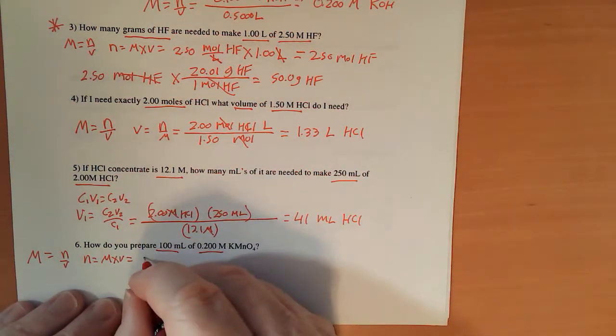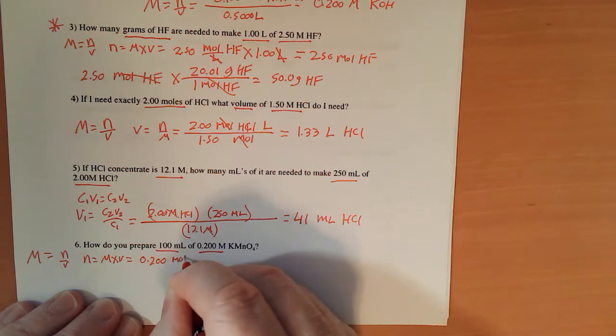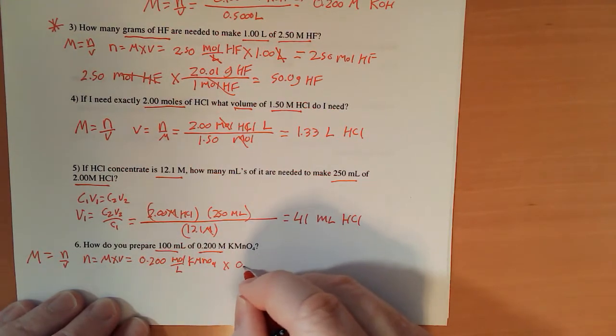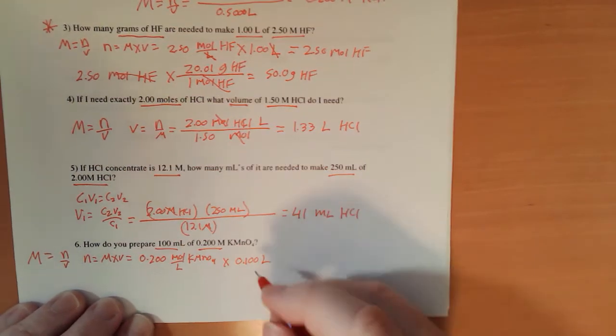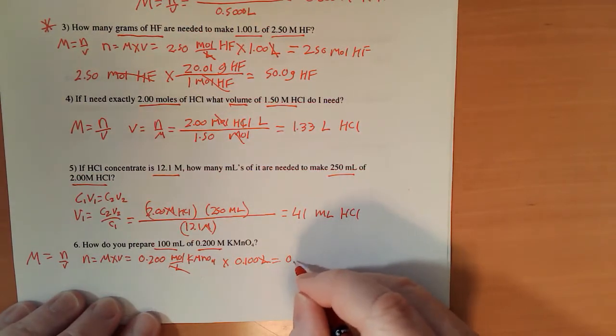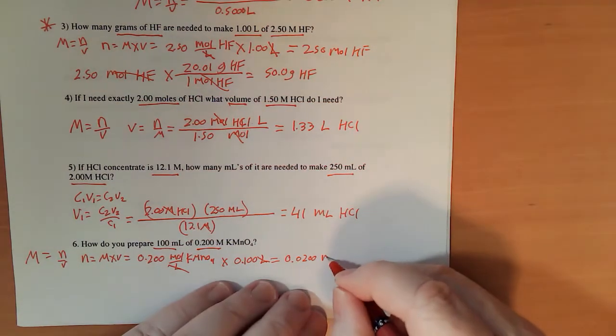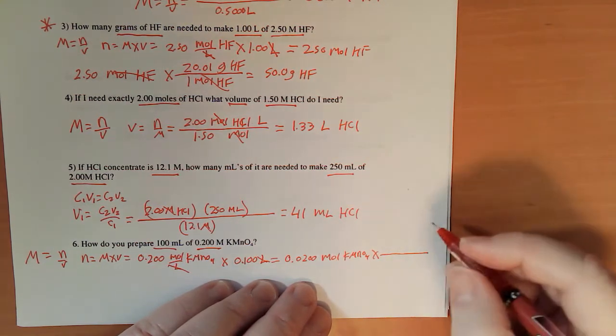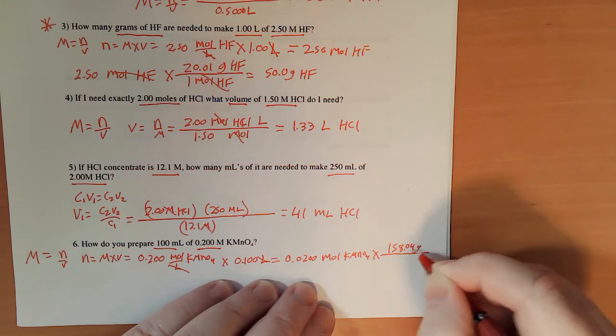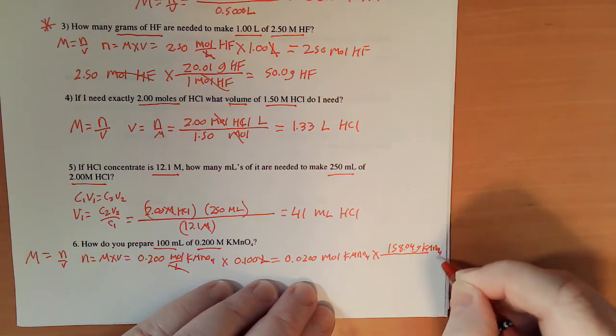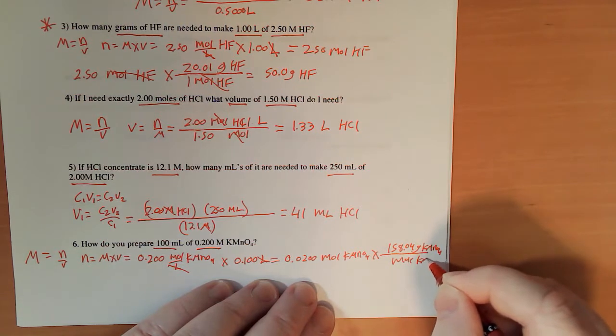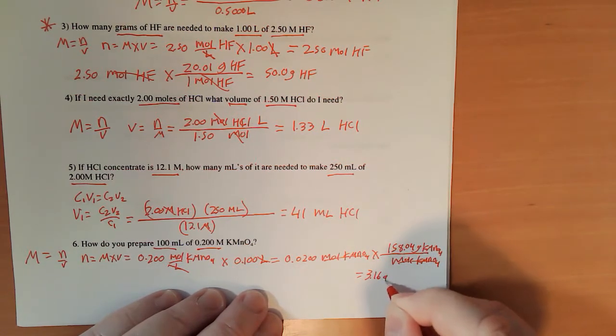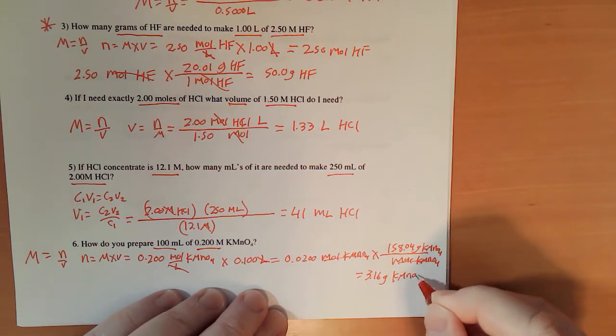Which equals 0.200 moles per liter KMnO4 times 100 milliliters is 0.100 liters. Liters cancels liters, this is 0.0200 moles KMnO4, multiplied by its molar mass, which is 158.04 grams KMnO4 per mole. The moles cancels, and I got 3.16 grams of KMnO4. There's the math part, now the explain part.